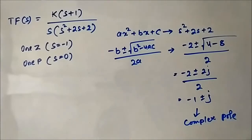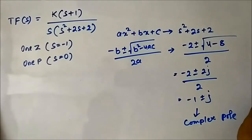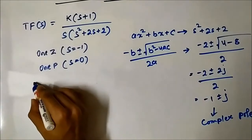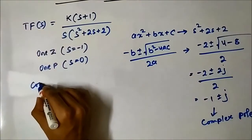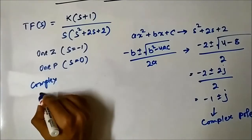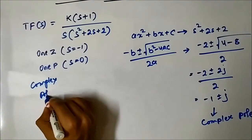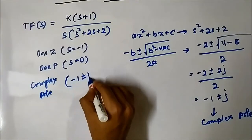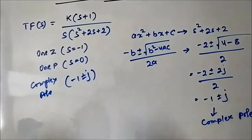This is the complex pole, minus 1 plus-or-minus j. So if we have to draw the pole-zero plot for this, we have one complex pole pair at minus 1 plus-or-minus j.